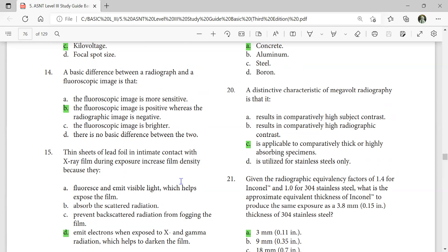Thin sheets of lead foil in intimate contact with x-ray film during exposure increase film density because they emit electrons when exposed to x-ray and gamma radiation, which helps to darken the film. The distinctive characteristic of megavoltage radiography is that it is applicable to comparatively thick or highly absorbing specimens.